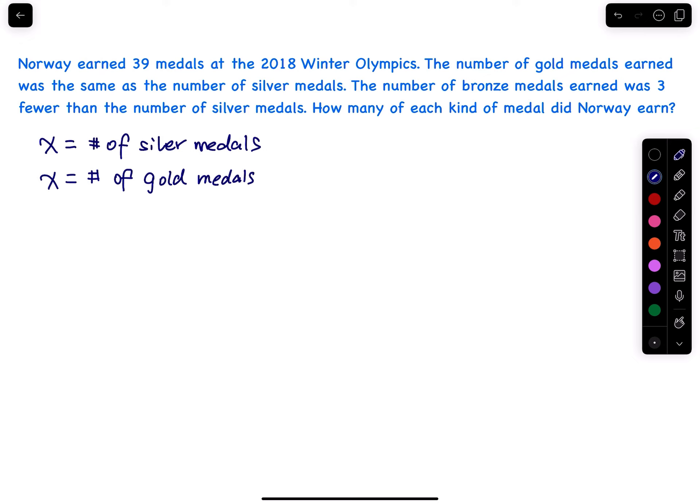The bronze is three less than the silver. The bronze is whatever the silver is, we have to subtract three from it. So bronze is a smaller number, and then together they are equal to 39.